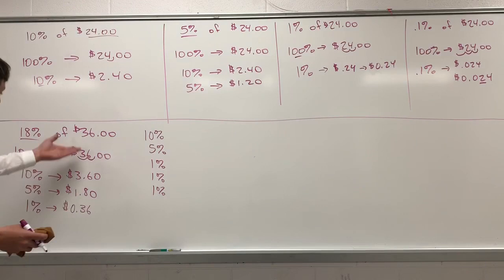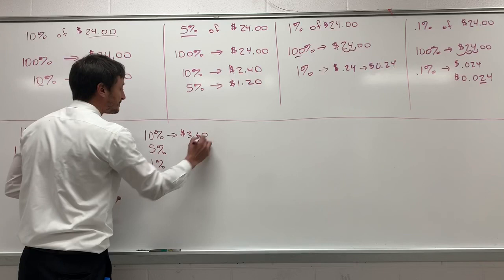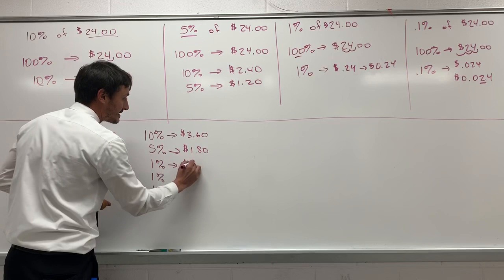We know that 10% is $3.60. We know that a 5% is $1.80. We know that a 1% is $0.36. And we have this three times.